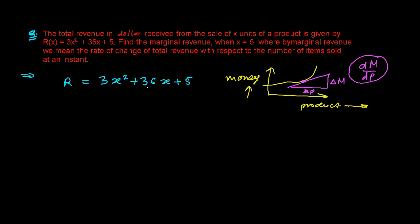It will be 3 times 1 square, again 36 times 1 and 5. So 36 plus 3, that will be 39, 39 plus 5, 44. So I'm making $44 if I'm selling one product. Similarly, if I'm selling two product, three product, my revenues will increase.